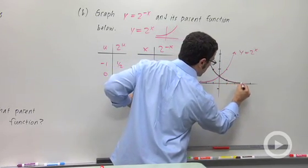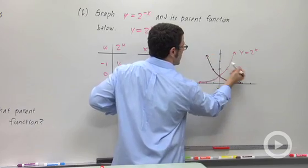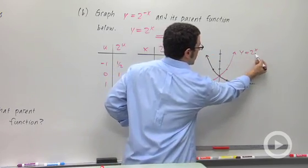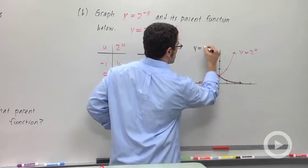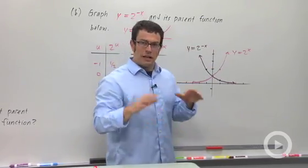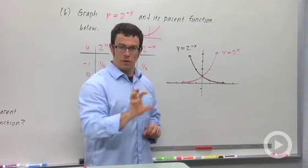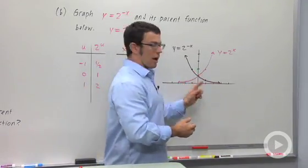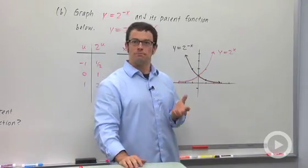So as predicted, it's a reflection of our parent graph, y equals 2 to the x. This is y equals 2 to the negative x. Just remember, any time you take a function and you replace its x with a minus x, you reflect the graph around the y-axis. And that's it.